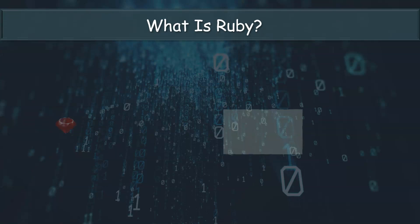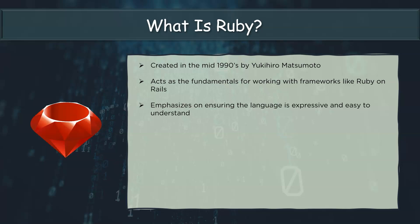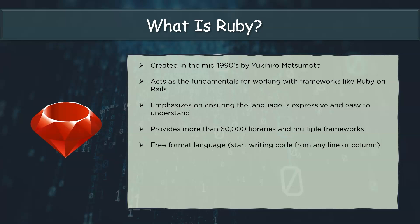Developed by Yukihiro Matsumoto, Ruby is one of the most popularly used languages today. It's the basis for frameworks like Ruby on Rails and has an expressive and easy to use syntax. Providing more than 60,000 libraries, Ruby has its own definite set of keywords and is a dynamically typed language. Some features include it being a free format language, which means you can start writing code from any line or column, and it's also case sensitive.